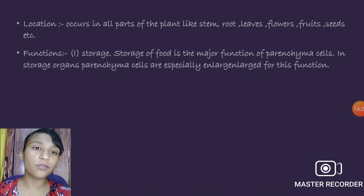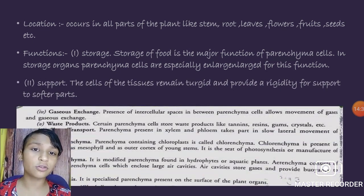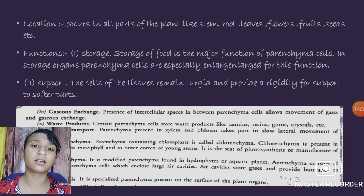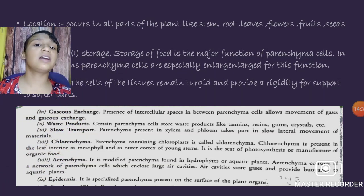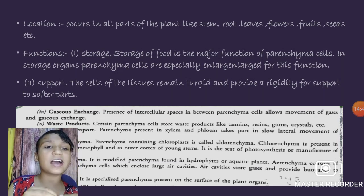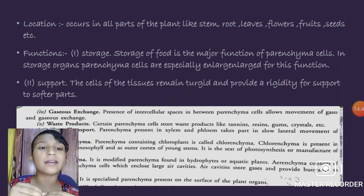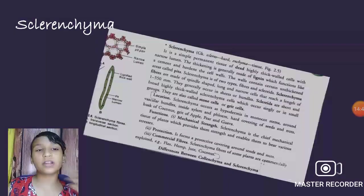Functions of parenchyma: to store food, give support to the plant, aid in gas exchange, and slow transport. Chlorenchyma is parenchyma containing chlorophyll. Aerenchyma is parenchyma found in aquatic plants with air cavities that help the plant float. Chlorenchyma helps in photosynthesis, and aerenchyma has cavities that help the plant.